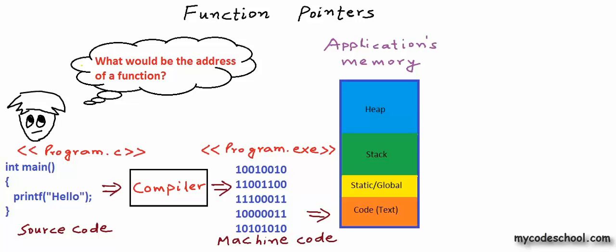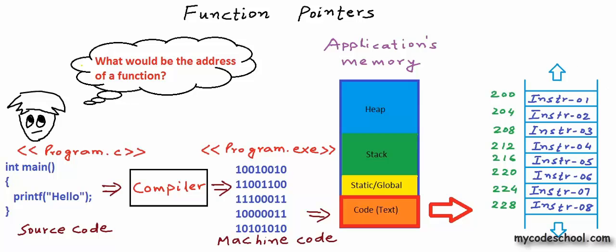What I'm going to do now is zoom into the code or text segment. Let's assume that each instruction in machine language takes four bytes. Each partition here is a block of four bytes and address is increasing from top to bottom. We have instruction 0 at address 200, the next instruction at address 204, the next at 208, and so on. Instructions in a program are executed sequentially. The only exception is when an instruction itself says to jump to another instruction at a particular address — which will happen in case of function calls. For example, if instruction 01 at address 200 is currently executing, by default the next instruction is instruction 02 at address 204, unless instruction 01 is something like 'go to instruction 05 at address 216', which happens in case of function calls.